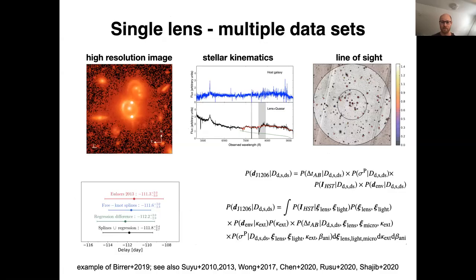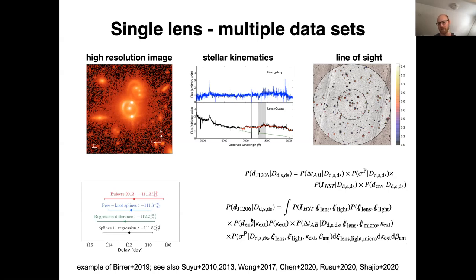Let me quickly go into what we do on a single lens with multiple data sets. We compile different data sets including high resolution imaging to measure the distortions in very fine detail, stellar kinematics of the deflector galaxy — required to get an independent measurement of the lensing potential — line-of-sight distortion analysis to infer the distortion caused by larger-scale structure, and of course the time delay measurement. We can combine all of this together to produce a posterior on the distances.